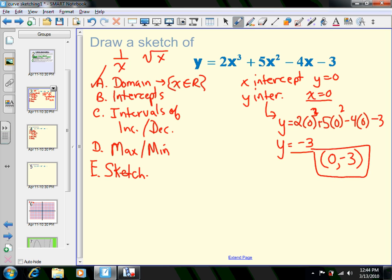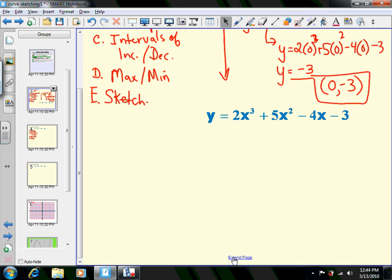X-intercepts are going to be trickier to solve. We take our original function y = 2x³ + 5x² - 4x - 3 and set y = 0, then solve for x. This is tough to factor, so I'm going to use polynomial division. We look at the function and try numbers like +1, -1, or factors of -3 to see which ones make it equal to zero.